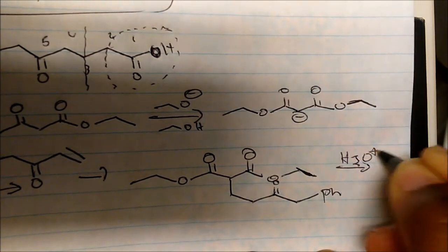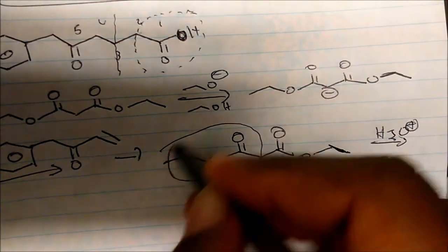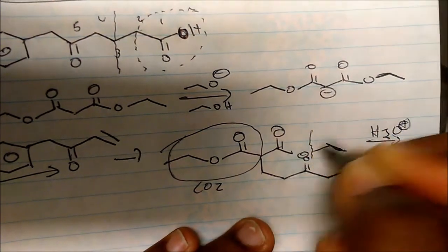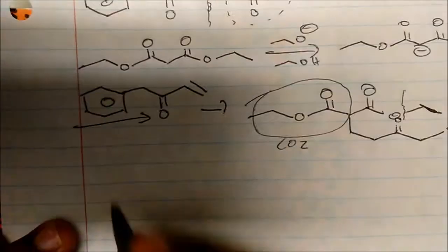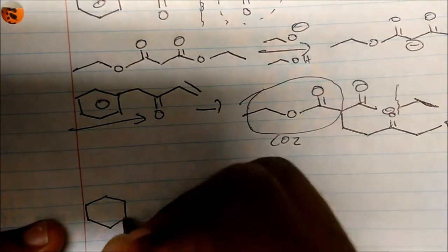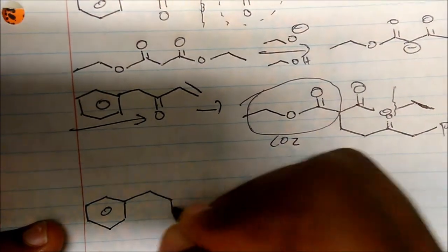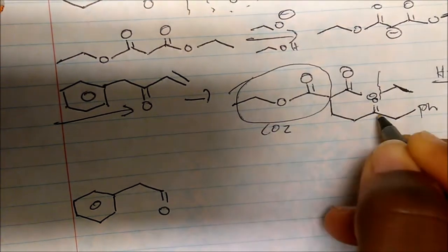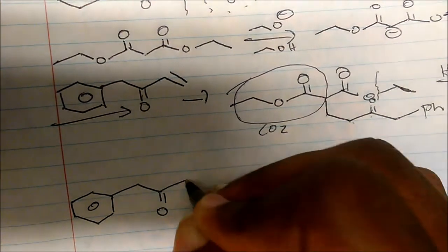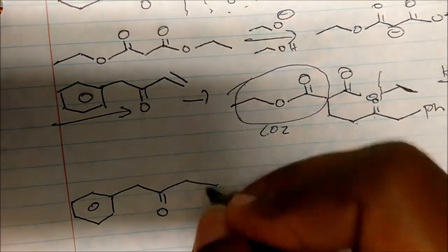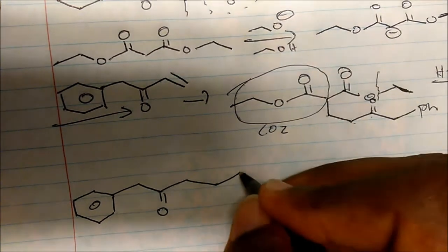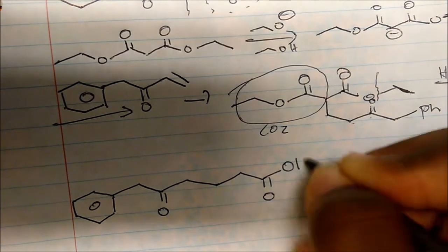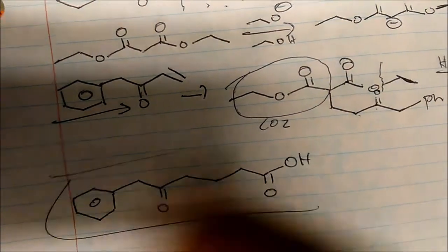The next step is hydrolysis. Once I throw this in acid, this whole ester group will go to CO₂. We hydrolyze and form the carboxylic acid. Redrawing the structure: there's my phenyl group, there's my carbonyl carbon bonded to this carbon, bonded to the next carbon, bonded to the next — and there goes my acetic acid portion. That gives us the molecule.